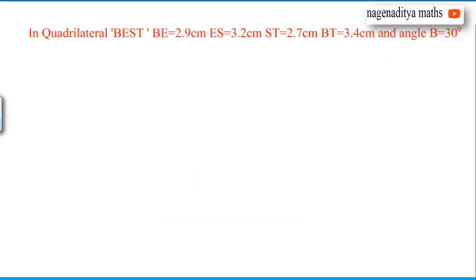In a quadrilateral BEST, BE is equal to 2.9 centimeters, ES is equal to 3.2 centimeters, ST is equal to 2.7 centimeters, and BT is equal to 3.4 centimeters, and the angle B is equal to 30 degrees. With these given measurements, we have to construct a quadrilateral.